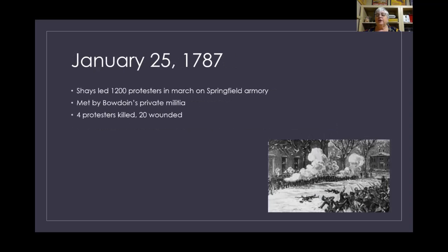On January 25th of 1787, Daniel Shays led 1,200 protesters in a march on the Springfield Armory. They were going to seize the weapons, though we're not entirely sure what their full plans were. They were met by Bowdoin's private militia, and these men were willing to fight the veterans. In the end, four protesters were killed and twenty were wounded.